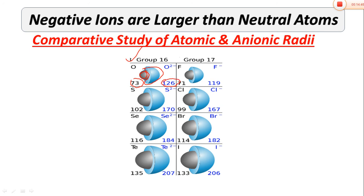Comparing further, the sulfur atom has an atomic radius of about 102 pm, and its anionic size is larger when sulfide ion S²⁻ is formed, demonstrating the same pattern of size increase upon negative ion formation.